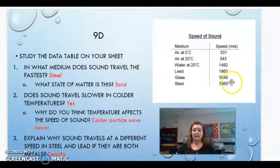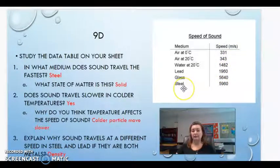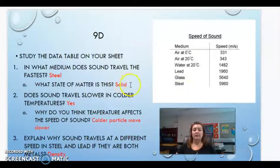So if I'm looking at my data table, here's a speed. So the fastest speed is this bottom one right here, steel. In what state of matter is this? Steel is a solid, right? It's a metal. It's solid. And we know that about sound already that it does travel the fastest in a solid. So that does add up.